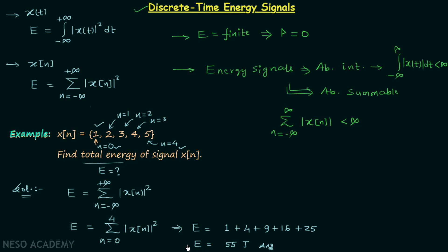The total energy is 55 joules, which is a finite value — it is not infinity. Therefore, signal x(n) is an energy signal and its power is equal to zero. So this is all for this lecture; we will see you in the next one.